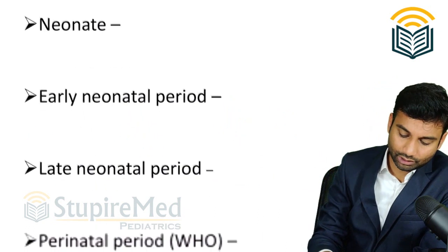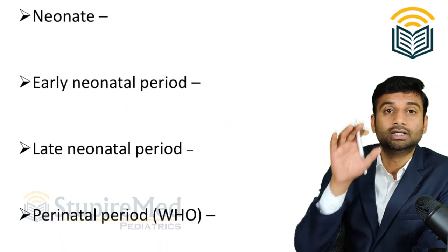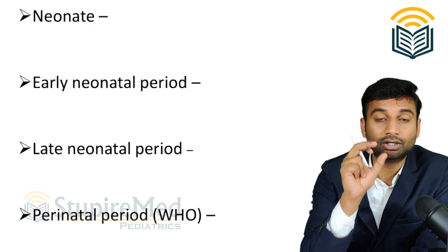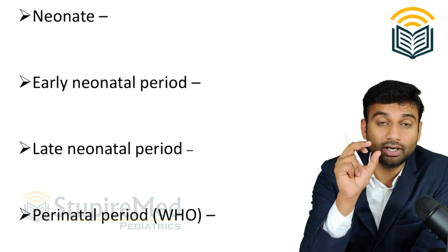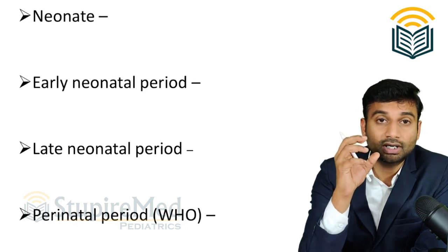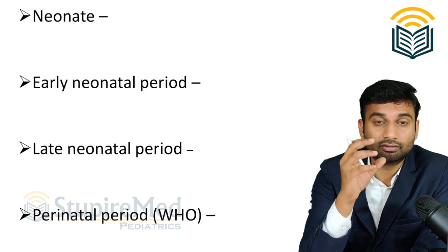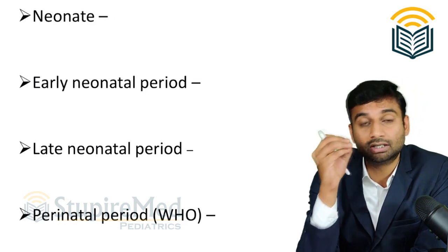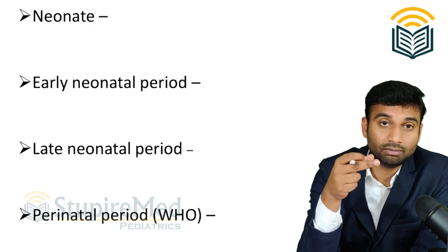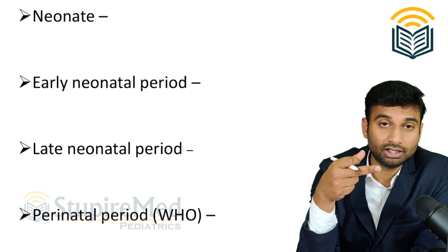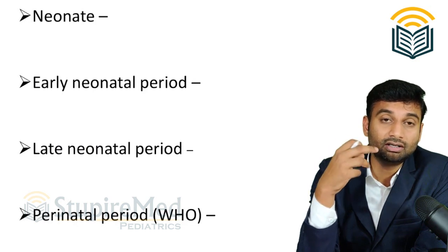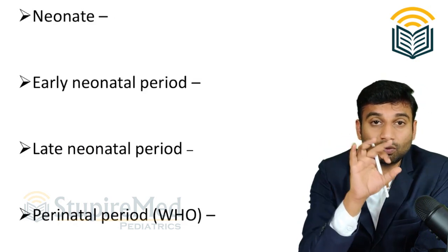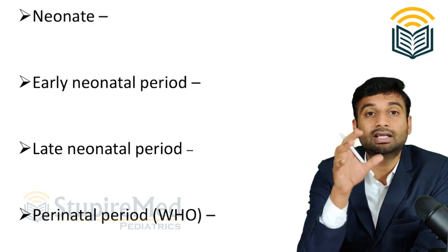Why do you need to understand the terminology of neonatal babies? Because some neonatal diseases or clinical conditions are exclusively pertained to the age, weight, or gestational week of the baby. For example, few conditions are focused in preterm babies — like necrotizing enterocolitis, which is most commonly seen in preterm babies. If the examiner gives you a postterm, post-dated, or large for gestational age baby, they are concentrating on topics related to the infant of a diabetic mother. This is how terminology helps you rule out wrong options and choose the best option in clinical-based questions.